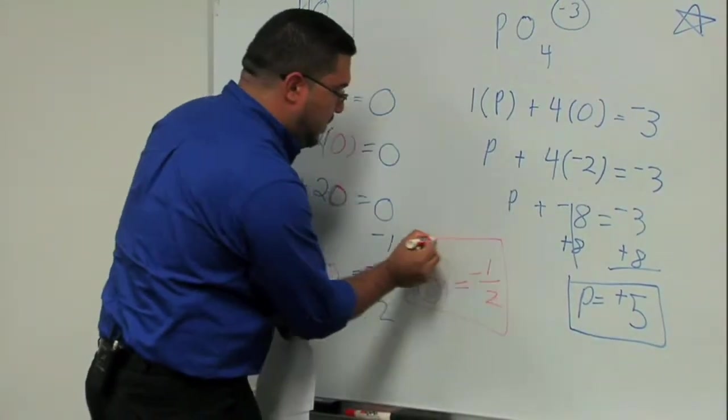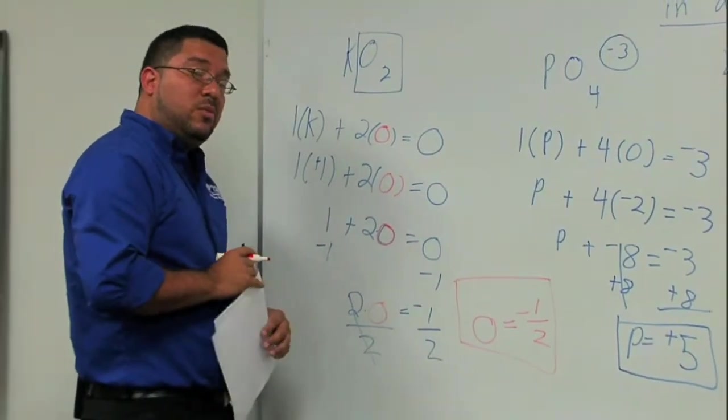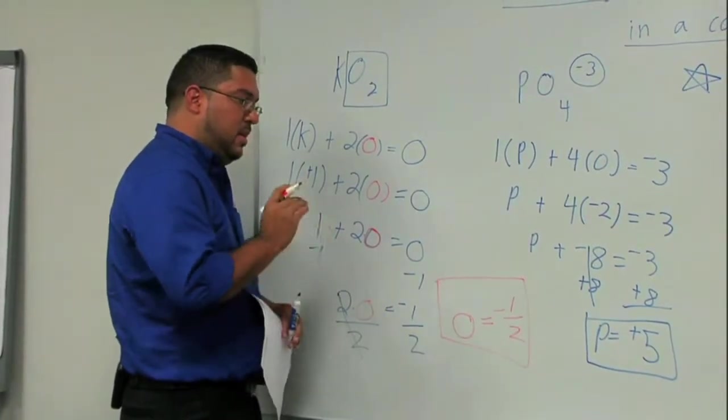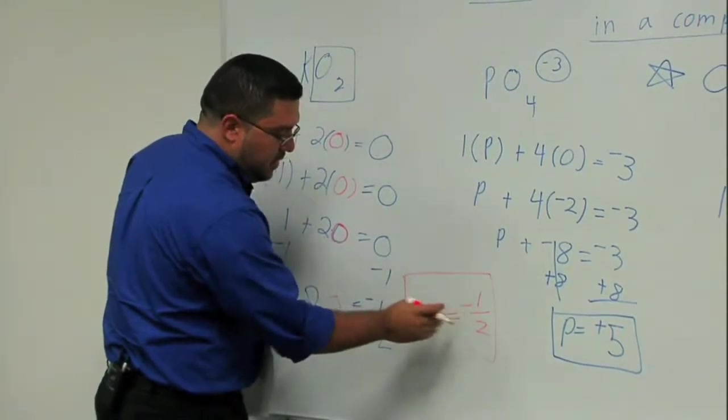This is one of the exceptions I was talking about that you have to be careful for when you're doing these problems. So do be aware. Oxygen is typically equal to negative two but in some cases it can actually be equal to a negative one half.